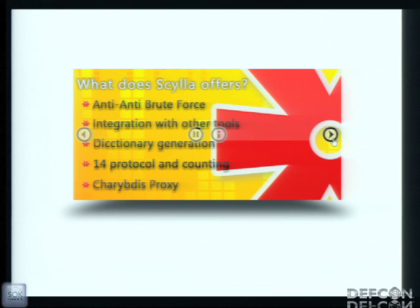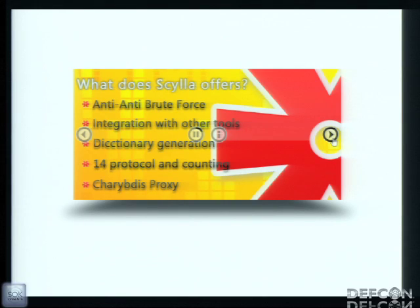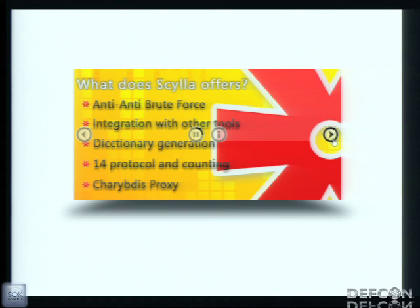It integrates with other tools. You can use FGDump to dump password hashes from Windows servers, and Nmap to see which services are on the server. There's also a cool dictionary generator where you can load a list and make permutations with those passwords to make more complex passwords. Until now it has support for 14 protocols — I think it's a lot, but we'll try to do even more each day.